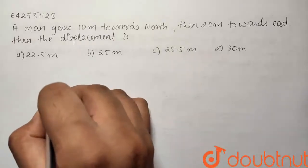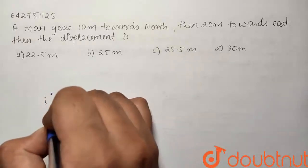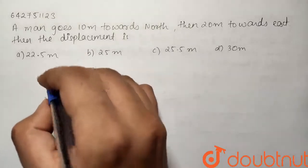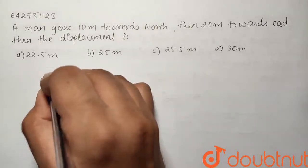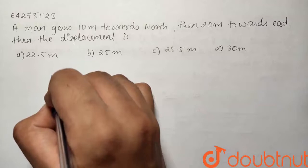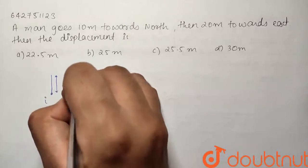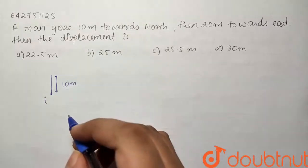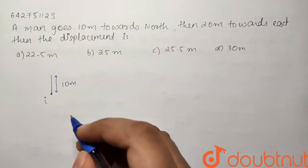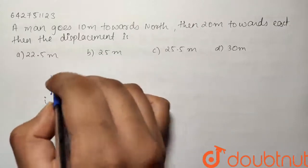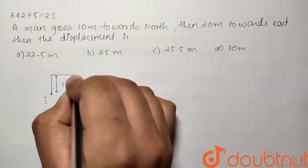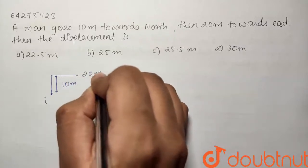So basically, let us say this is your initial position. Now you are going 10 meters towards north. Let us say this is our north direction. So you moved 10 meters in this direction. Now we are moving again 20 meters towards the east. We know this is our east direction. So let us move 20 meters towards east.